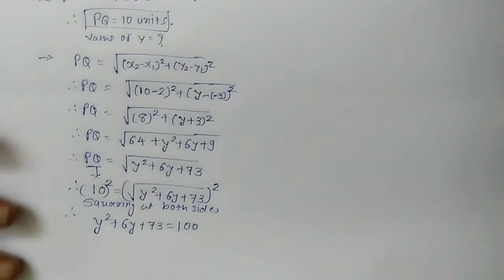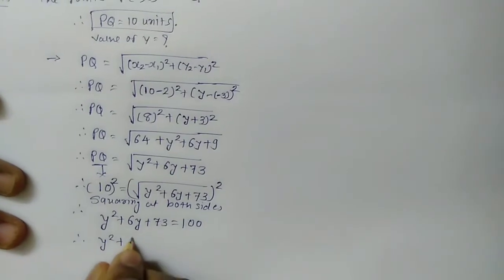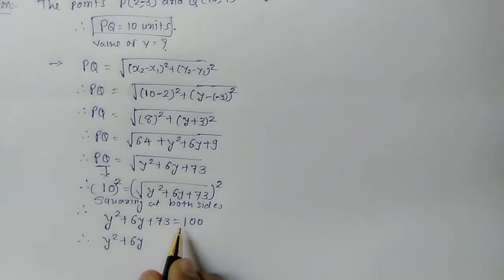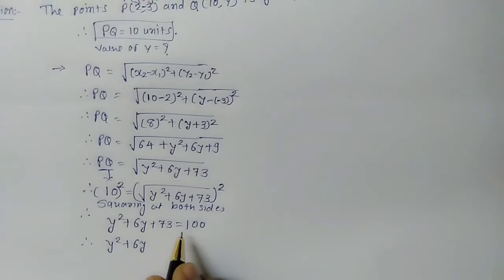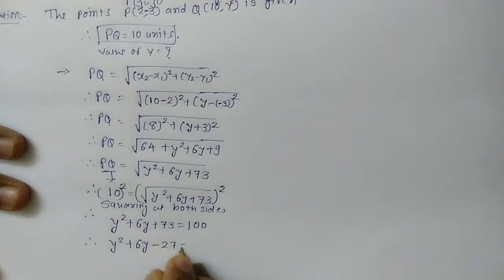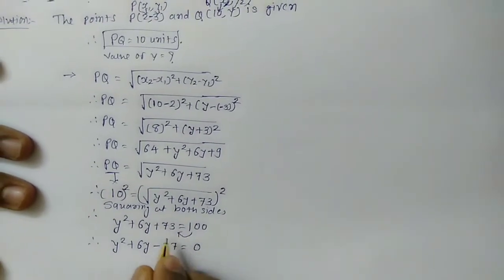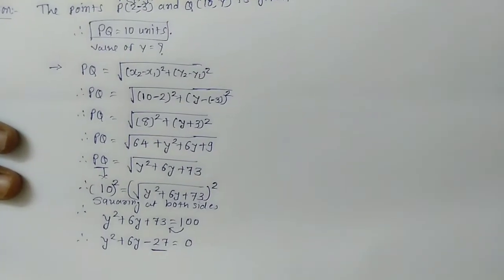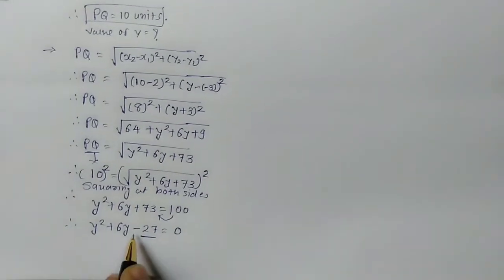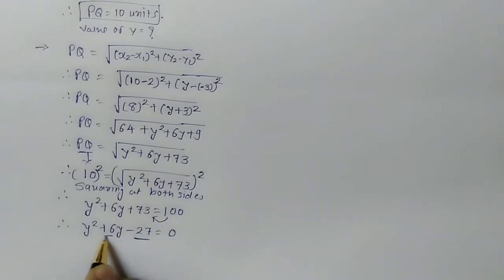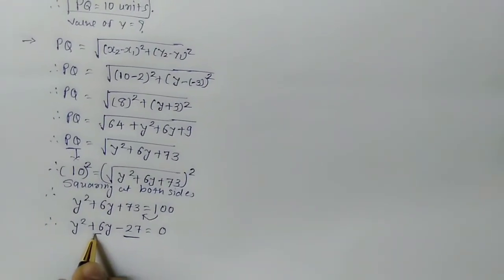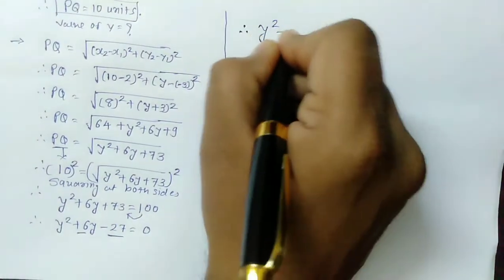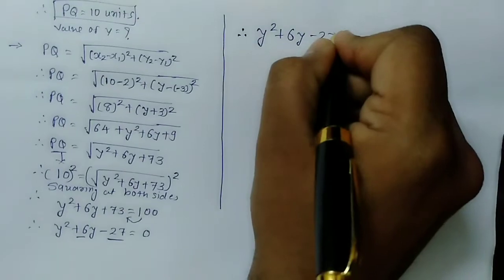Bringing 100 to the left-hand side: 73 - 100 = -27. Therefore, Y² + 6Y - 27 = 0. Now we need to factorize 27 in such a way that the subtraction of both factors gives +6Y.